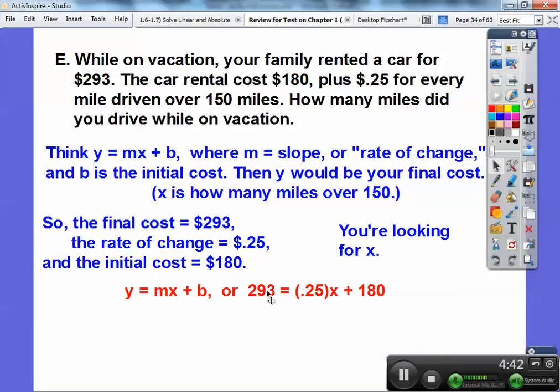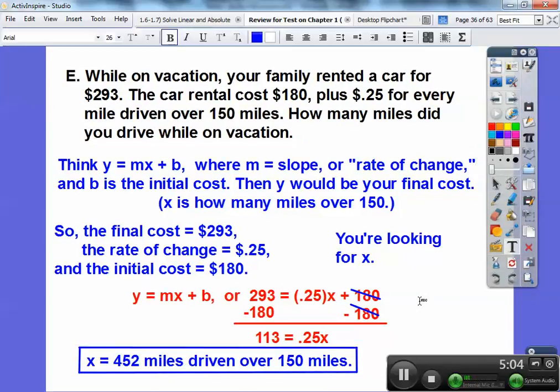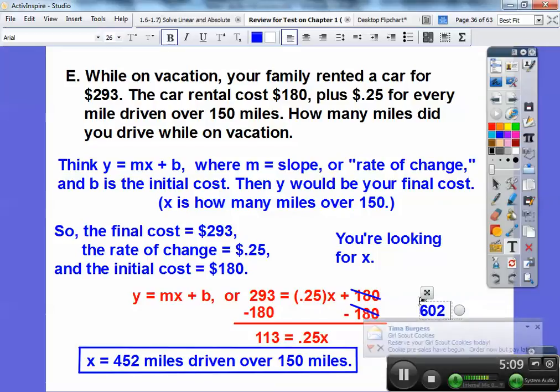The final cost is $293. That's how much they had to pay. Rate of change is that 25 cents per mile, and the initial cost is 180. So here we're looking for x. Y equals mx + b. This is the final cost, y, and then how much it's going to go for each mile, and then plus 180. So we're going to solve for x. And I made a mistake right here. You've got to add these two. It's 452 miles over 450, so that's going to get me 602 miles. The true answer is 602 miles.